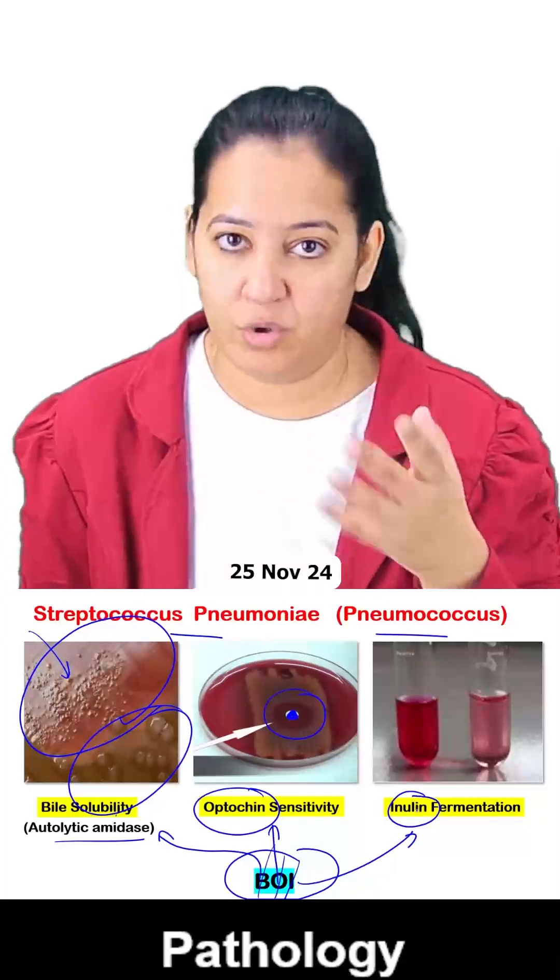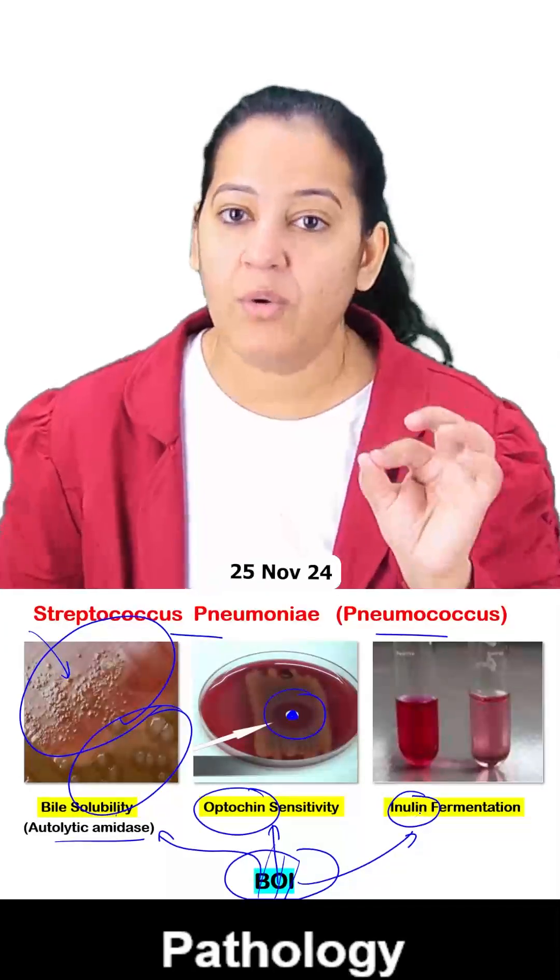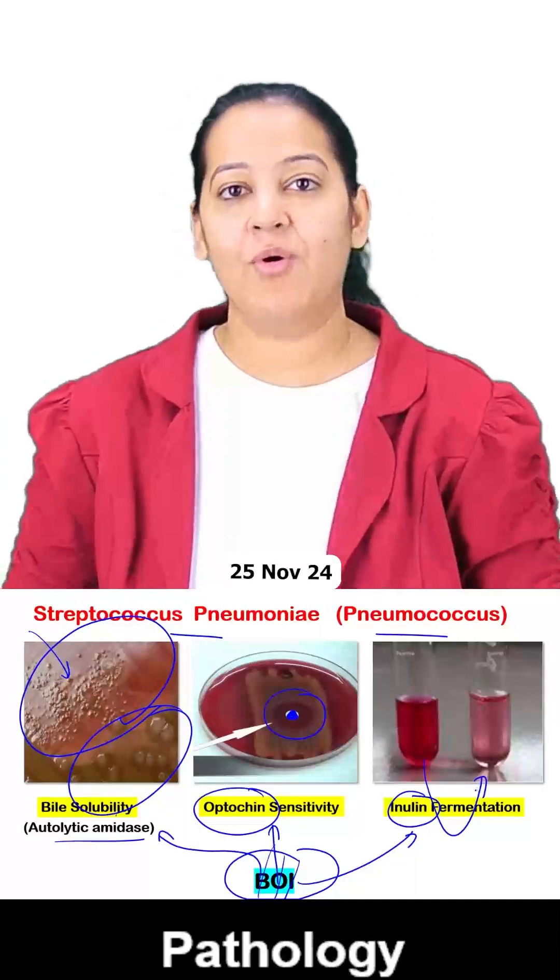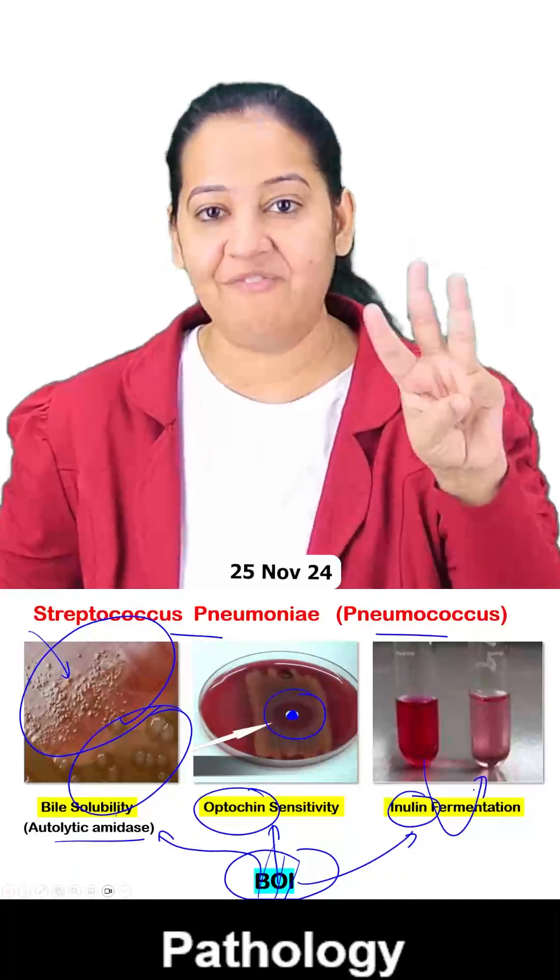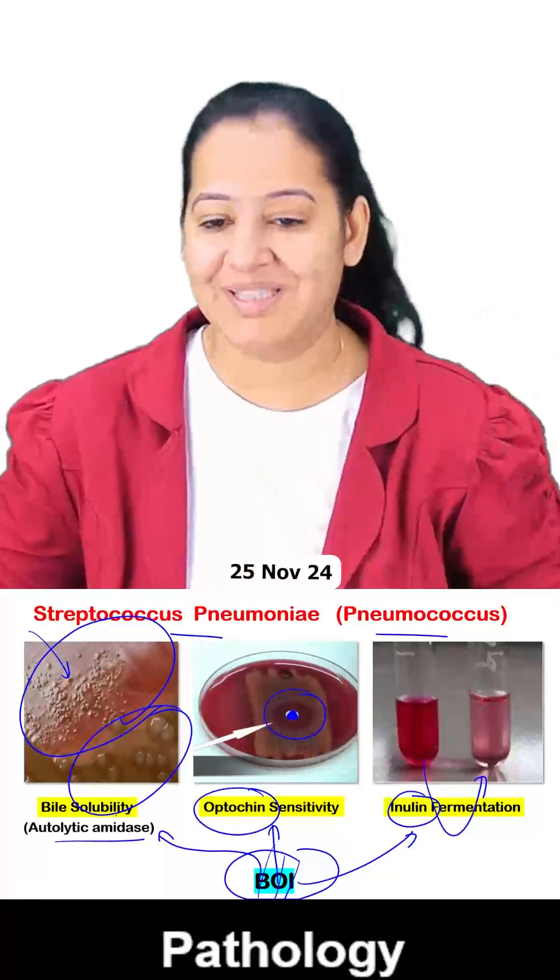And inulin is a sugar like fructose, galactose. So it is a bacteria which ferments this unique sugar. So Pneumococcus have three unique properties: bile solubility, optochin sensitivity, and inulin fermentation. No other bacteria shows these three unique properties.